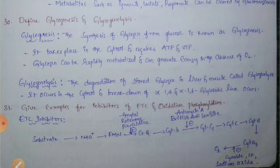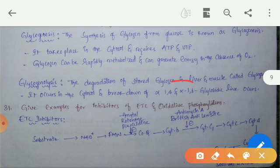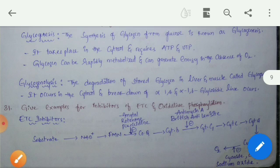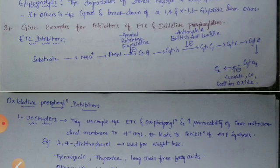Glycogenolysis is the degradation of stored glycogen in liver and muscle. It occurs in the cytosol by the breakdown of alpha-1,4 and alpha-1,6 glycosidic linkages. Glycogen has a tree-like structure that is converted into glucose molecules by breaking these alpha-1,4 and alpha-1,6 glycosidic linkages.